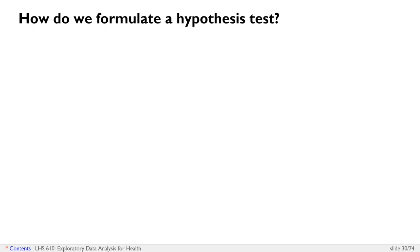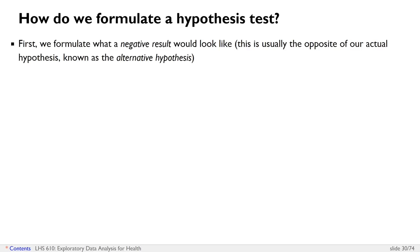So let's talk about how we formulate a hypothesis test. First, we actually formulate what a negative result would look like. This is usually the opposite of what our actual hypothesis might be, and the actual hypothesis is often termed the alternative hypothesis.